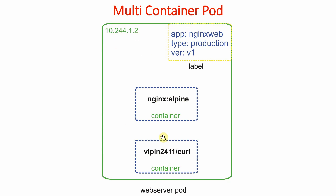Both containers can share storage and communicate using localhost. They will be scheduled together because the smallest unit is the pod, and one private IP address will be assigned. We can also label those pods — we will discuss labels in detail. That is the multi-container pod.